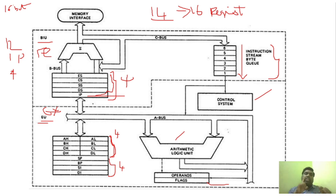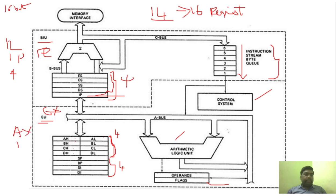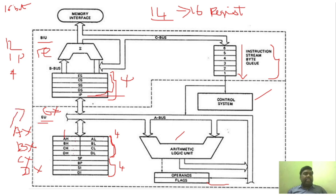Now we have to explain each register set. First, you can see the general purpose registers. Those general purpose registers can be four 16-bit registers, or they can be eight 8-bit registers. They are represented as AX, BX, CX, and DX — with higher and lower byte notation. What does A represent? A is the accumulator — this register performs the operation of an accumulator. That is why it is represented as A.